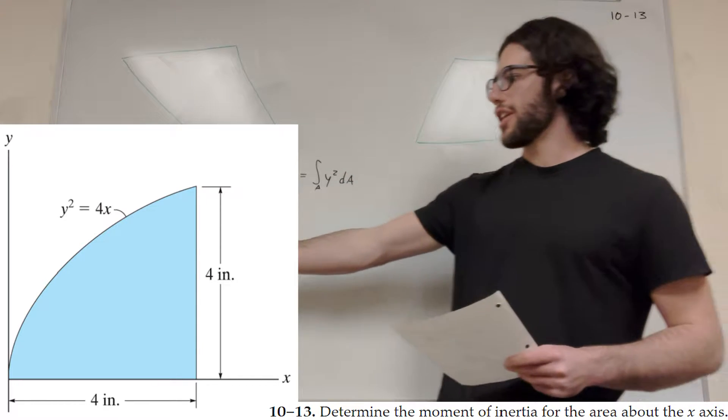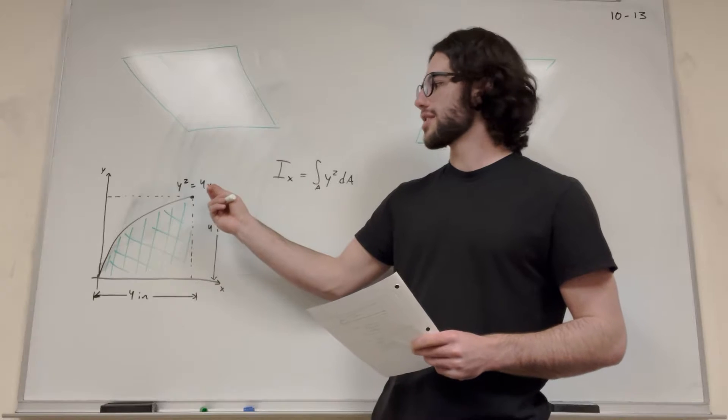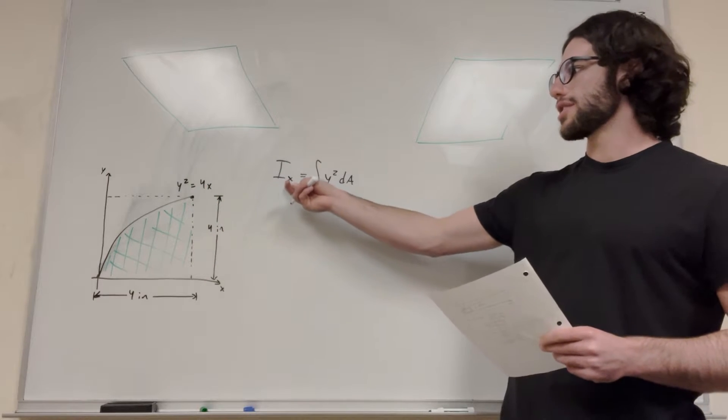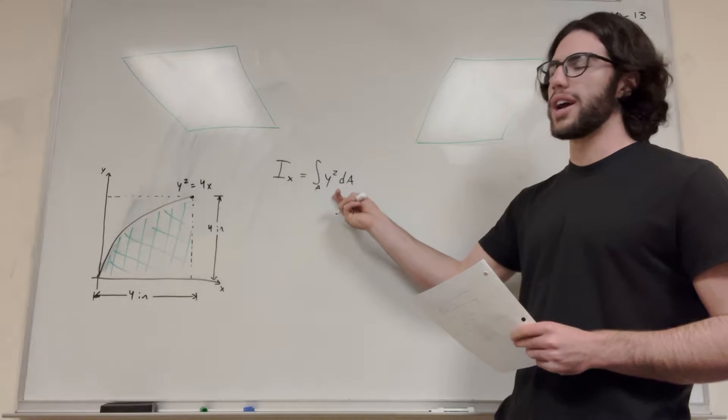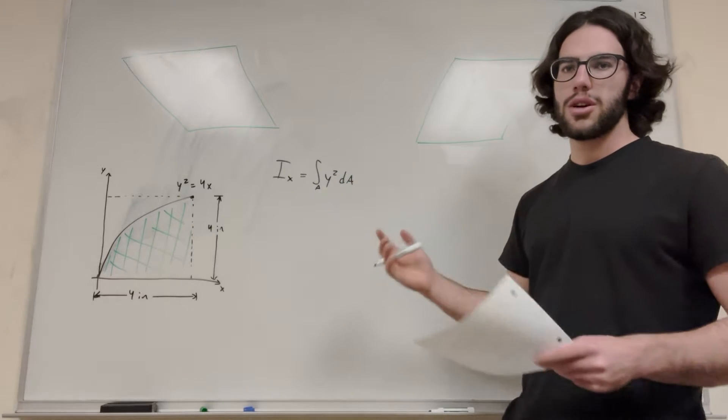So we have this area here, it's under the line y squared equals 4x. Our equation that we're going to use is the moment of inertia around the x-axis equals the integral over the area of y squared dA. So let's get started.